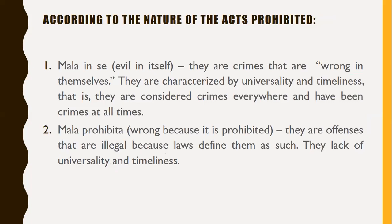According to the nature of the acts prohibited under the Revised Penal Code, we have mala in se and mala prohibita. Mala in se means evil in itself — these are crimes wrong in themselves, characterized by universality and timeliness, meaning they are considered crimes everywhere and have been crimes at all times. An example is murder — even without a law about murder, killing is inherently wrong. Acts that are inherently immoral are mala in se even if punished by special laws.